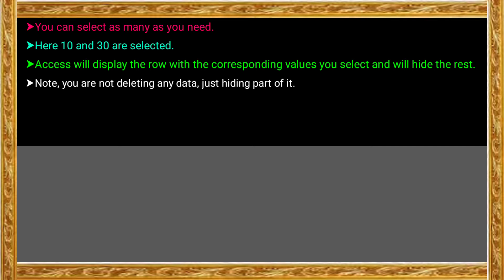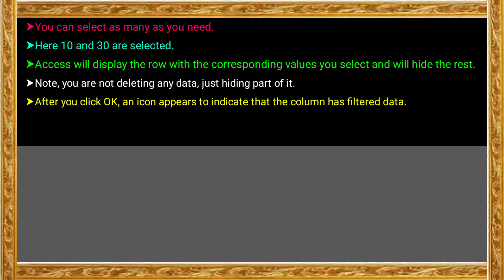If you want to show the unselected data, you can unhide the reporting options and records. After you click the OK button, the final filter option is applied. For the selected column filter options, you choose a particular set of records. After you click OK, an icon appears to indicate that the column has filtered data.